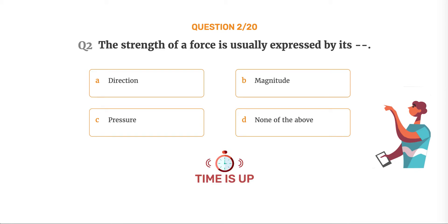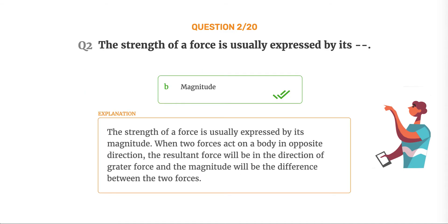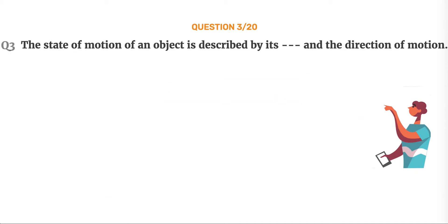The correct answer is Option B: Magnitude. The strength of a force is usually expressed by its magnitude. When two forces act on a body in opposite directions, the resultant force will be in the direction of the greater force and the magnitude will be the difference between the two forces.